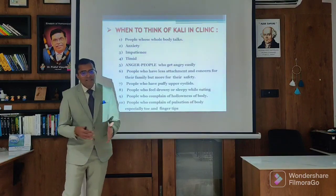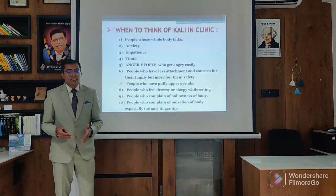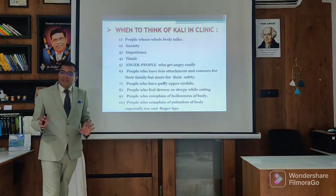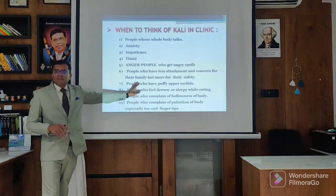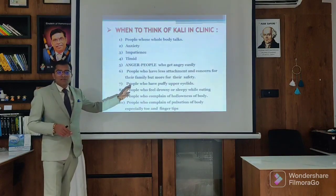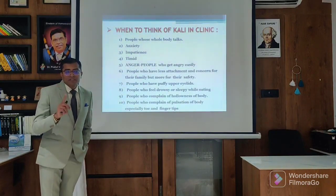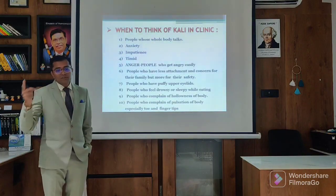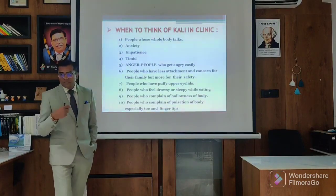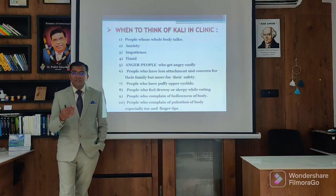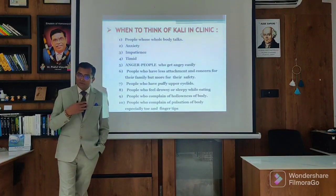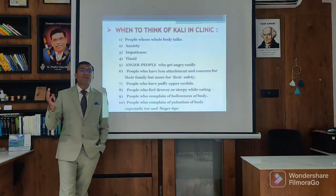People who have less attachment and concern for their family but more for their safety - this is a very important aspect of understanding. When there is a problem, they have to fight for bread and butter, fight for the family, fight with the family. These are the escapist kind of person. When there is a problem, they have less attachment with the family, they go out, they have less concern with the family, and they only think about their safety and security. This differs from Calcarea - Calcarea wants home and everything for their security, whereas Kali goes out from home for their security and safety.